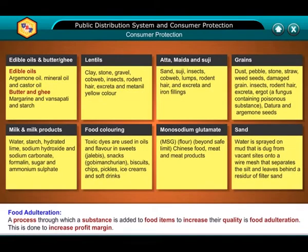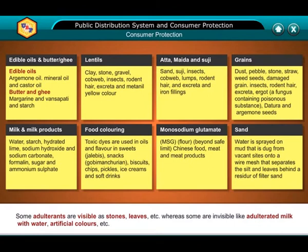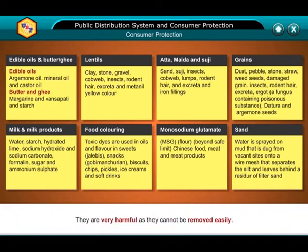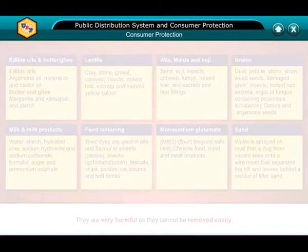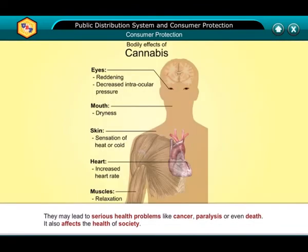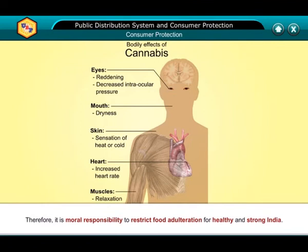Food Adulteration: Food adulteration is a process through which a substance is added to food items to increase their quantity and sold as genuine — this is done to increase profit margins. Some adulterants are visible, such as stones and leaves, whereas some are invisible, like adulterated milk with water or artificial colors. They are very harmful as they cannot be removed easily and may lead to serious health problems like cancer, paralysis or even death. Therefore, it is a moral responsibility to restrict food adulteration for a healthy and strong India.